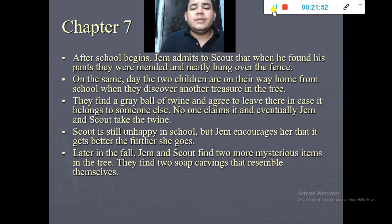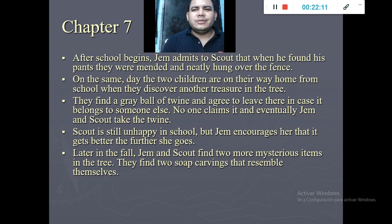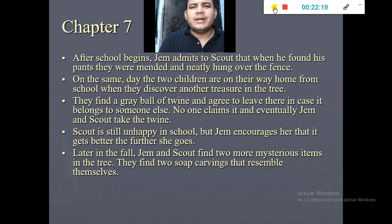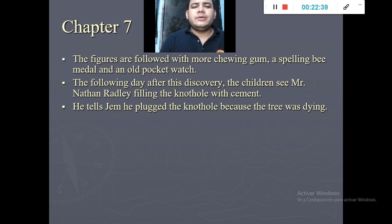They take the twine since nobody claims it. Scout returns to second grade and is not happy, but Jem encourages her. They also find other mysterious things in the knot hole: two soap carvings that resemble themselves, chewing gum, a spelling bee medal, and an old pocket watch. There were many presents left for them in the tree.